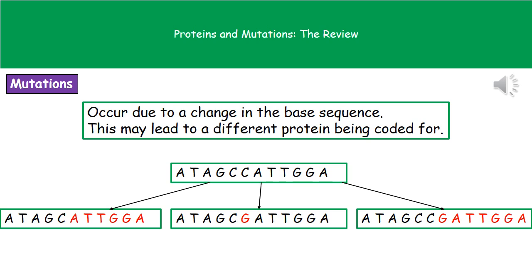If you think back to what we said about making our proteins — each section of three bases, as triplets, codes for an amino acid — as soon as we've deleted that base, all of the ones that follow are in a different sequence of three bases. So that means we're going to be coding for different amino acids and therefore a different protein.